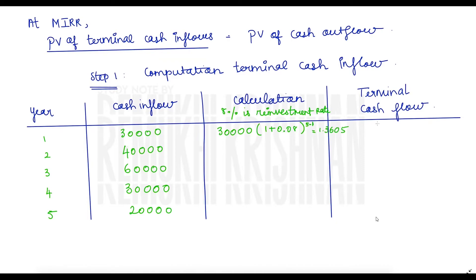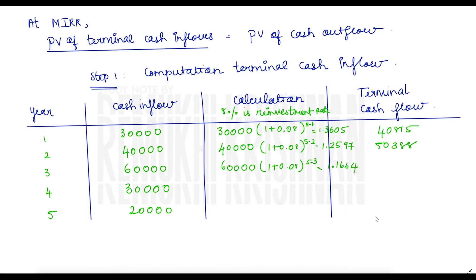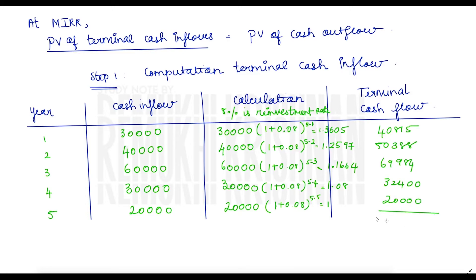For year one, we compound for four years (5 minus 1) since we compound from end of year one to year five. The same format is applied for all five years. Finally, I sum all the future values to arrive at my terminal cash flow, arriving at ₹20,000 for the last year and summing to get the total terminal cash flow.